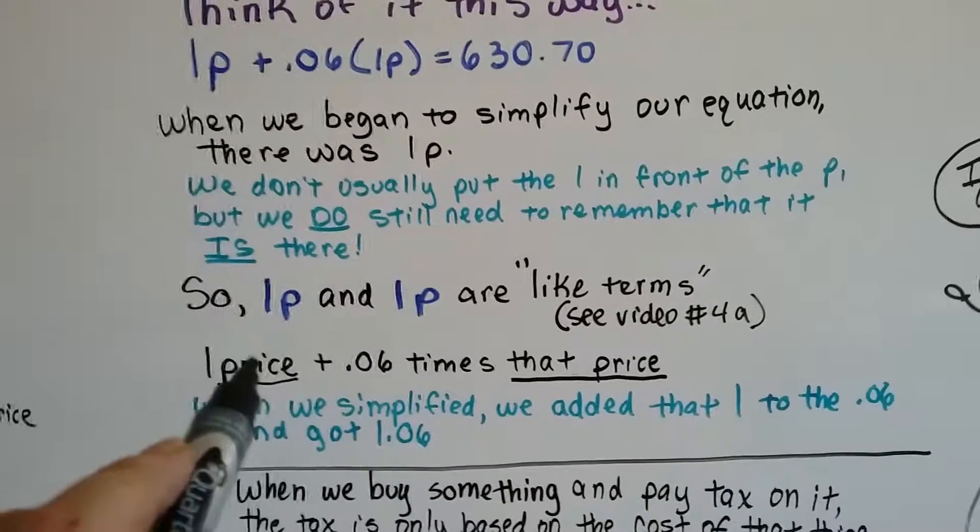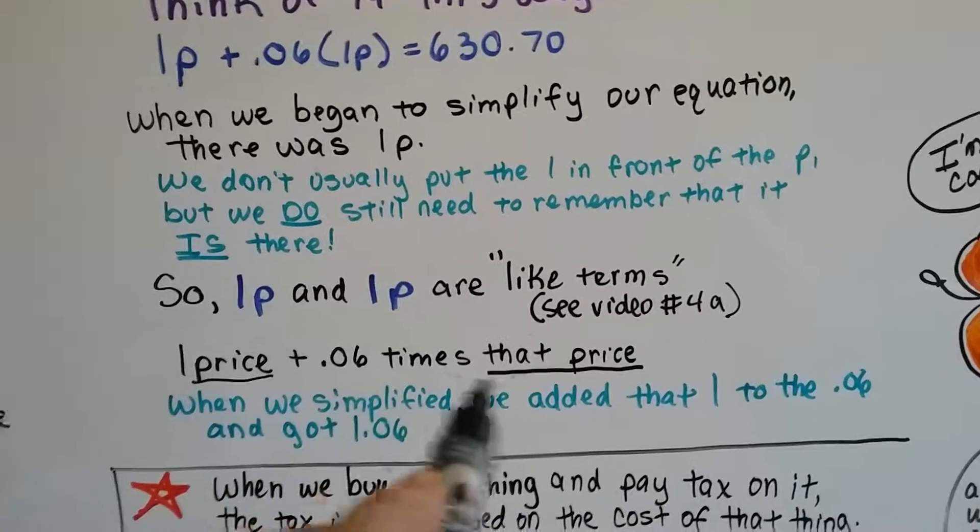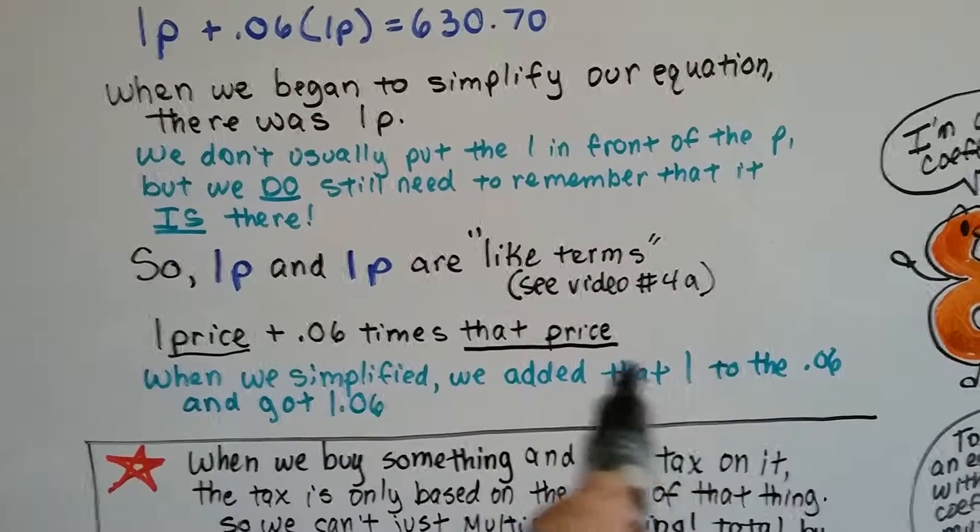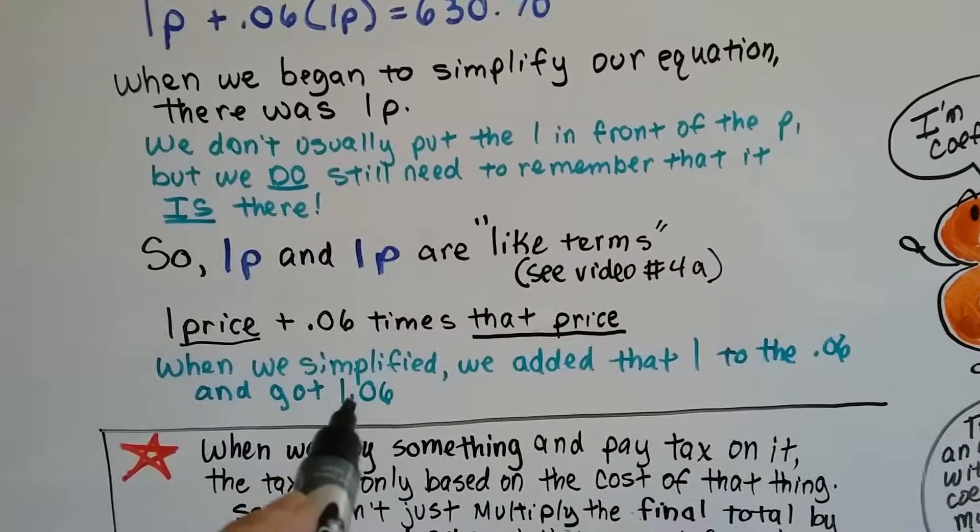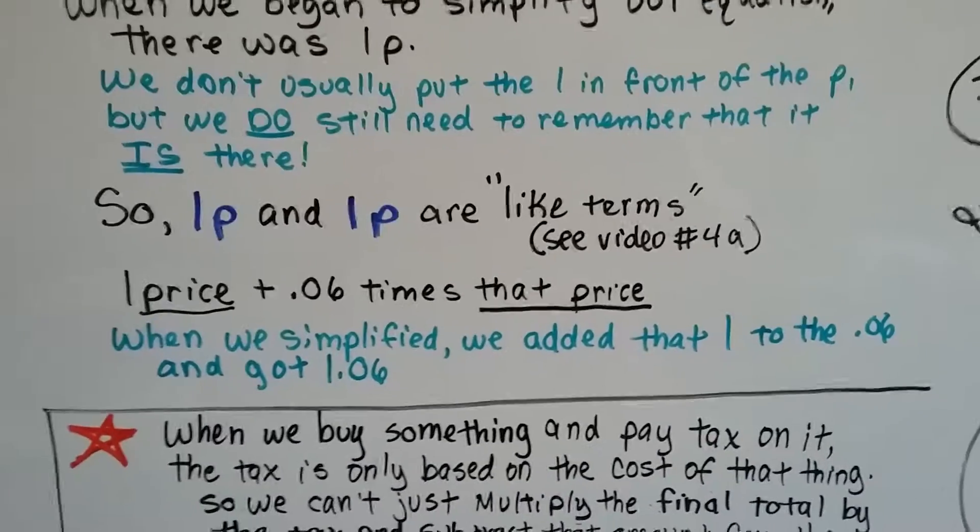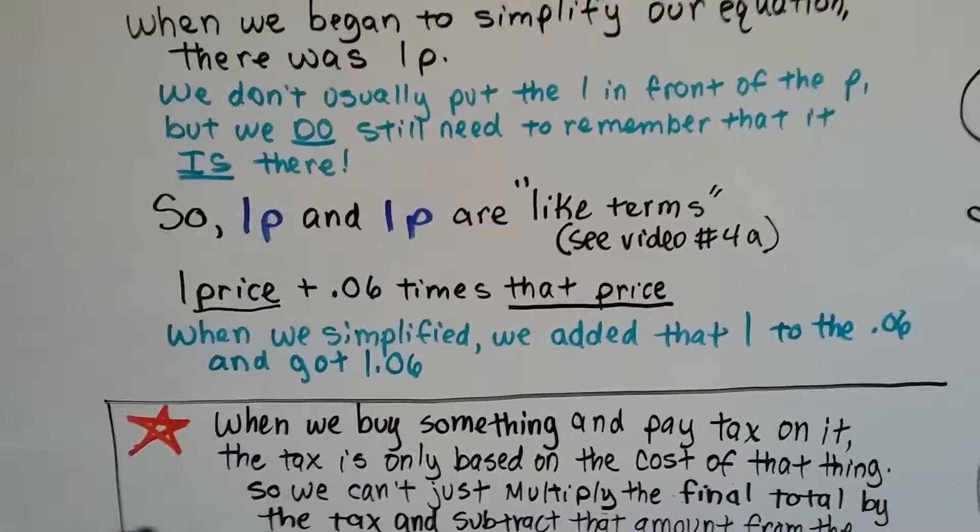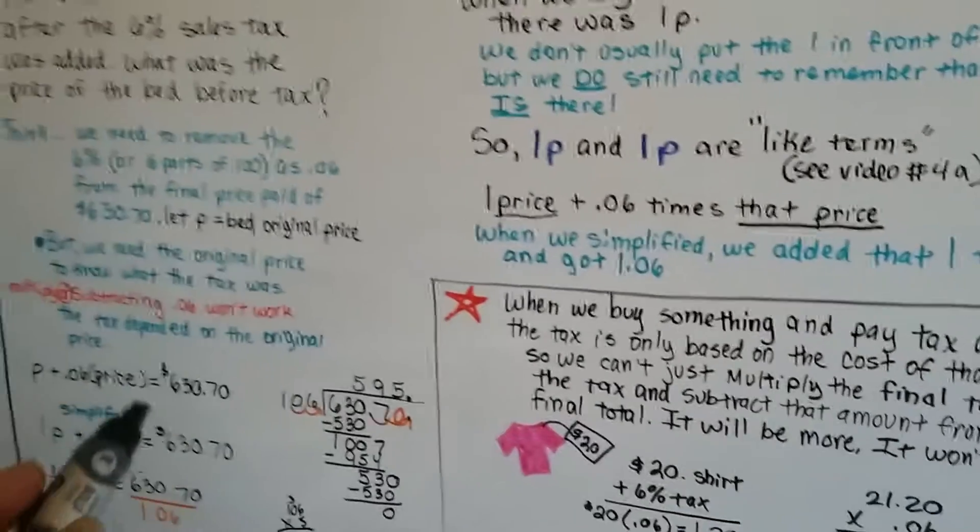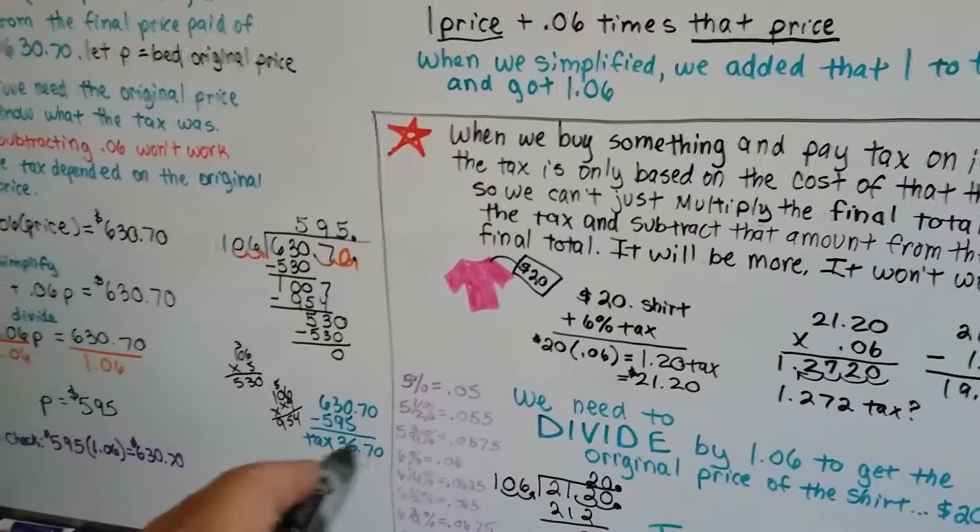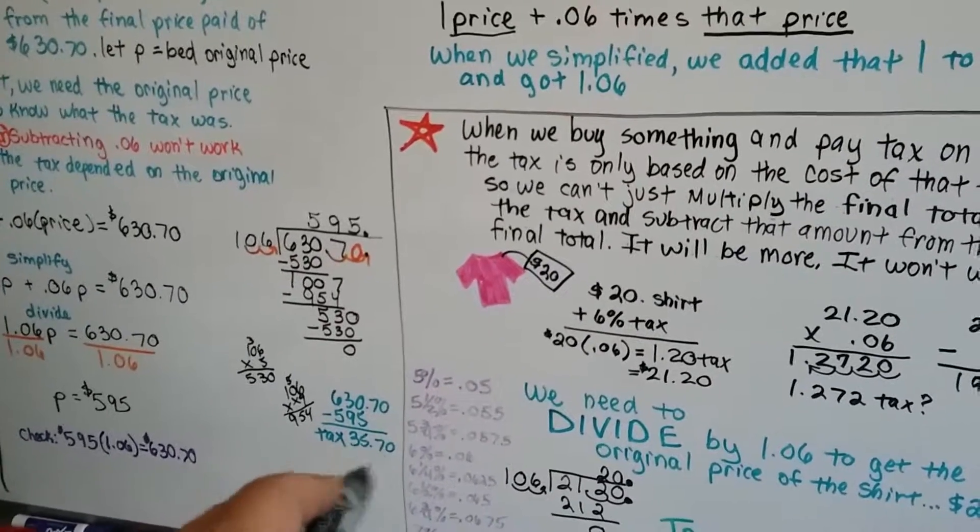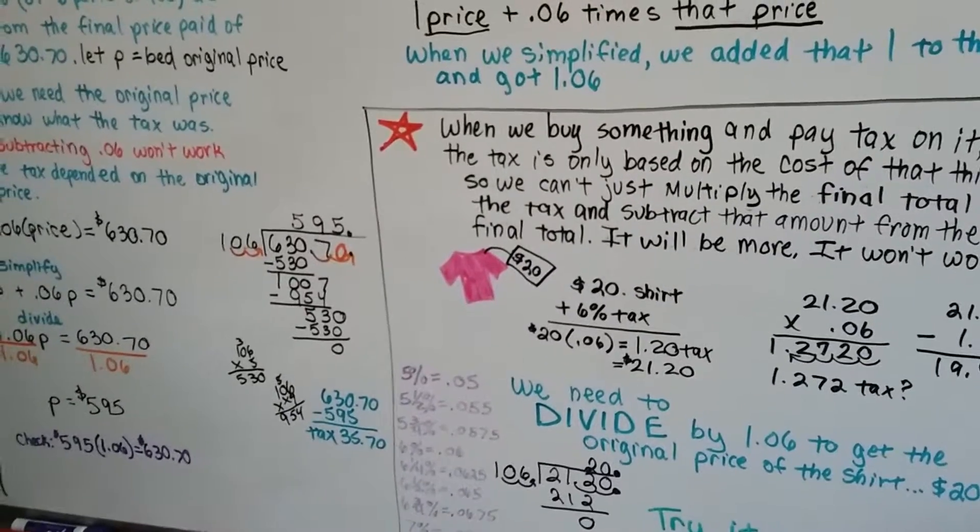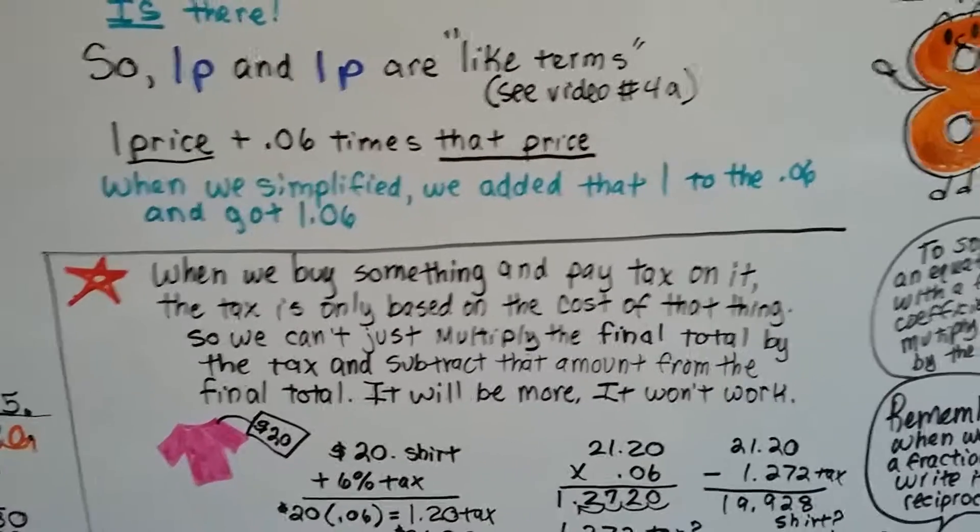So now we've got one price of the bed plus $0.06 times that price of the bed. And when we simplified it, we added the $1 to the $0.06 and got $1.06. Now after all this, I still had a student say to me, I still don't understand why I can't just multiply $0.06 times the $630.70 and get that $35.70 of the tax. And I said, because it won't work. It just won't work.